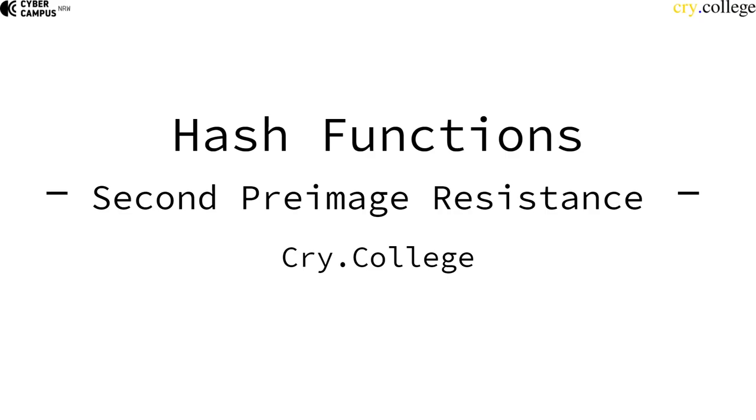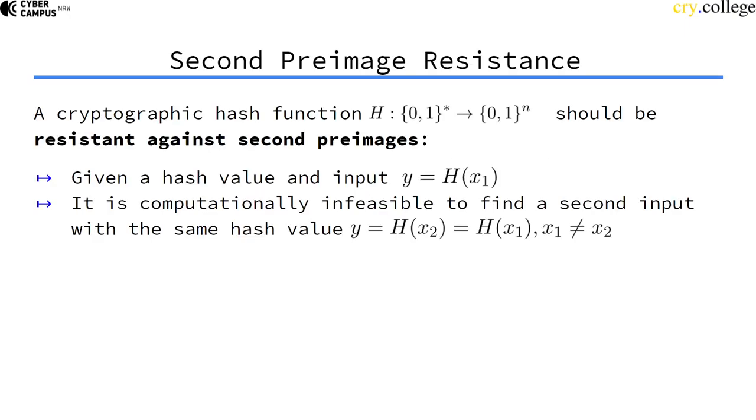The next security property of hash functions is second preimage resistance. It shouldn't be possible to find a second preimage, meaning that given a hash value and the input to the hash function (in this case, y and x1), it should be computationally infeasible to find a second input with the same hash value. So it shouldn't be possible to find an x2 that hashes to the same y, and here it's quite obvious why that should be the case.